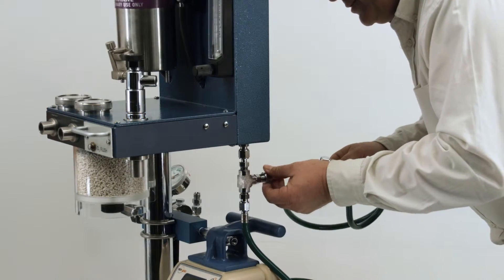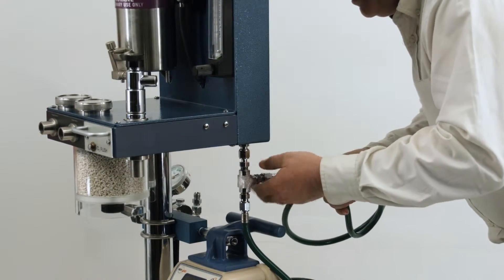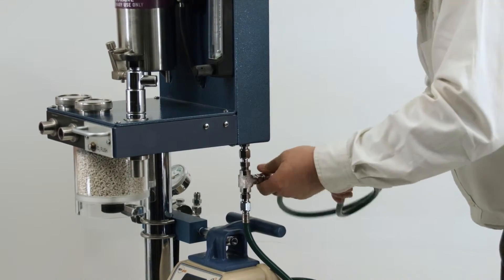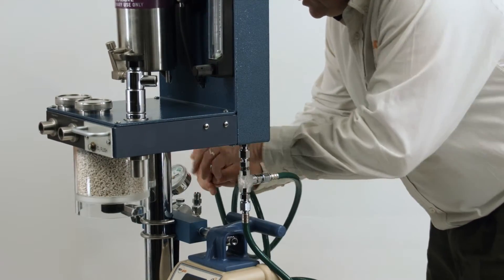Next we'll connect our oxygen E-tank supply to the other input. Again that has to be wrenched tight and then we come off our regulator for the tank here.